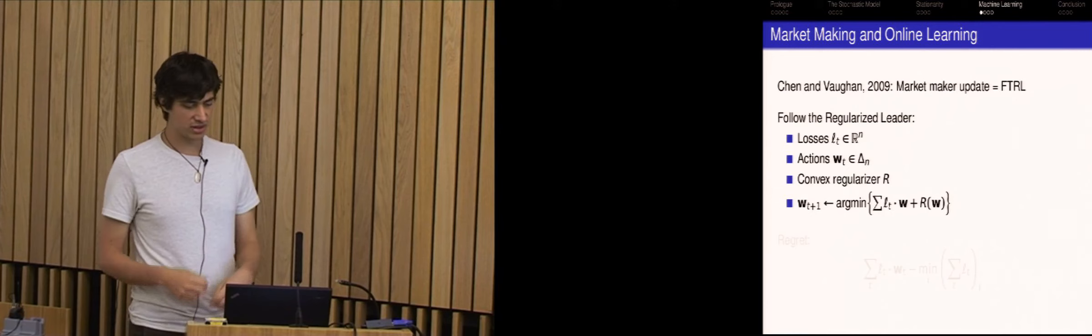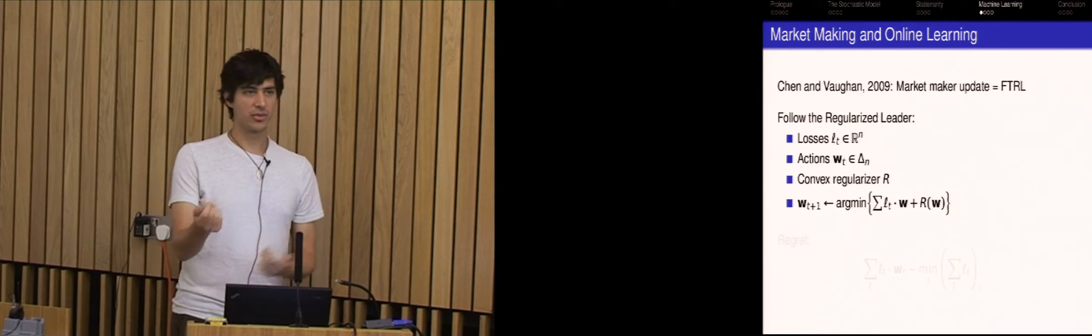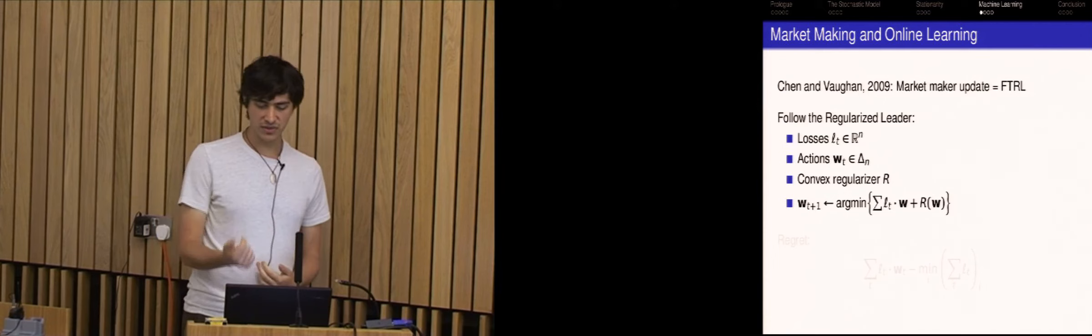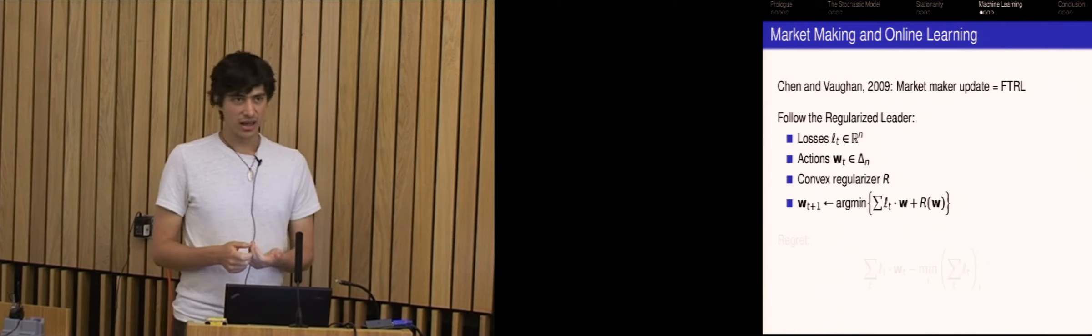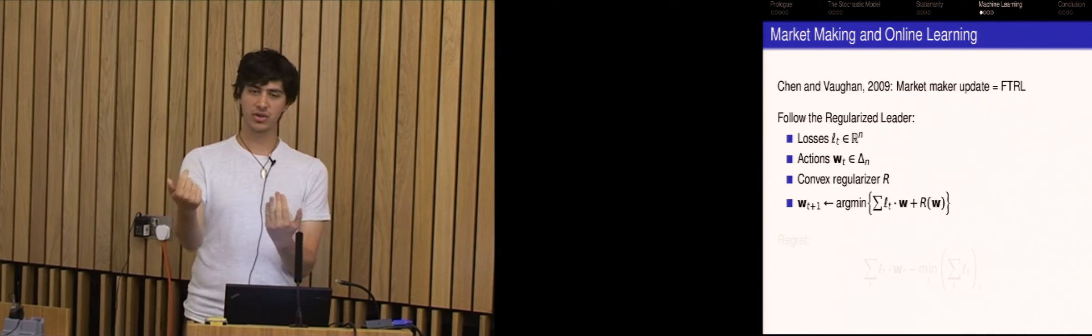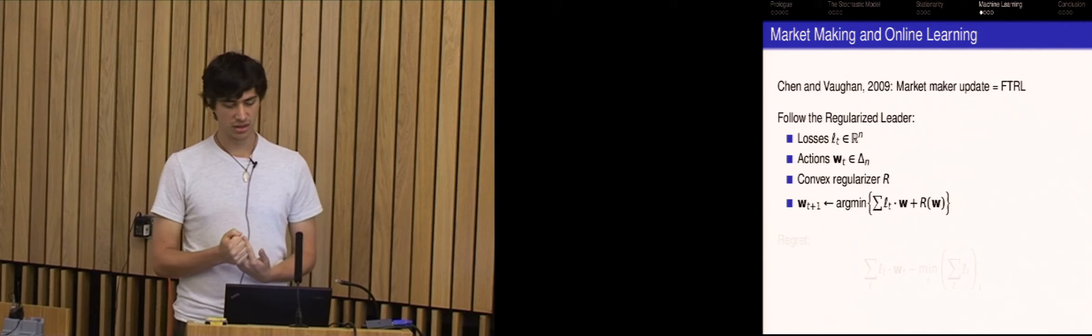So it's an open question on how to make this work for the more sensible demands. Basically you want some like maybe a utility based demand function where it makes sense to ask both of these questions, how much do you want in each setting? And I think it should still work out. So onto some interactions with machine learning. There's a Chen and Vaughn paper from 2009 that compares the market maker setting to follow the regularized leader, an algorithm from machine learning, online learning. So I'll just quickly review that algorithm.